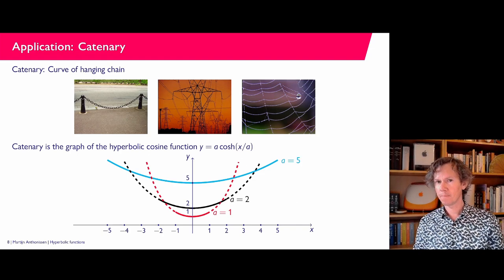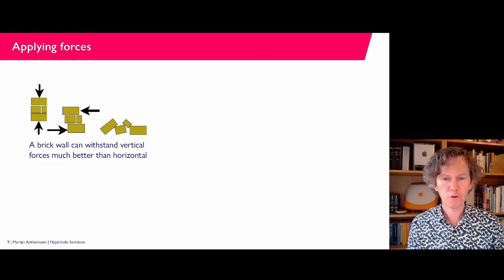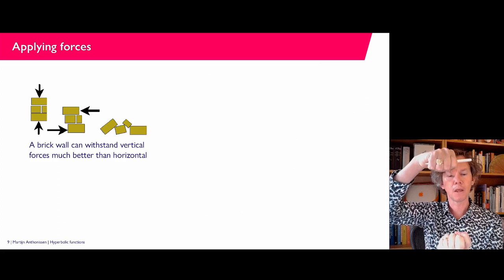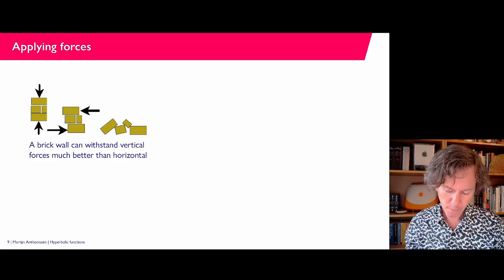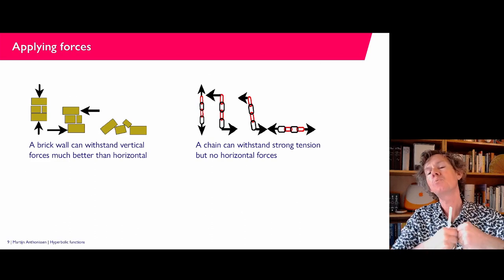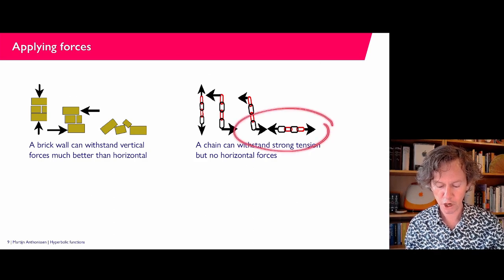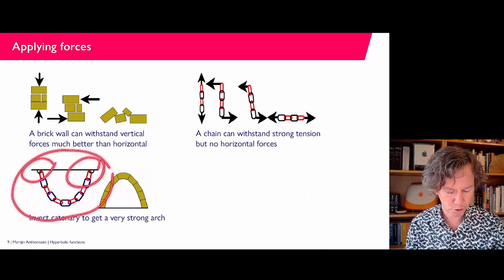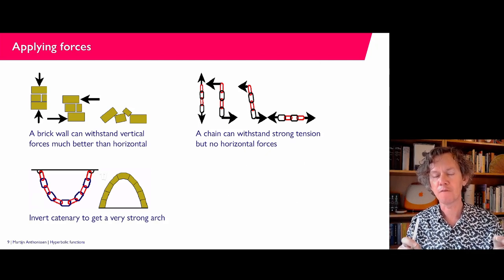The catenary is an interesting shape because you can also use it to construct buildings, giving a very firm structure. A brick wall handles vertical forces well but is weak against sideways forces. A chain, by contrast, naturally assumes a shape with no horizontal force components when supported at both endpoints. So if you take that shape and put it upside down, you get a very strong arch — with many architectural applications.